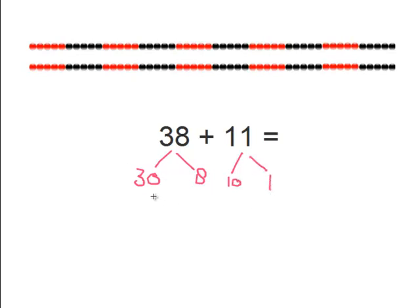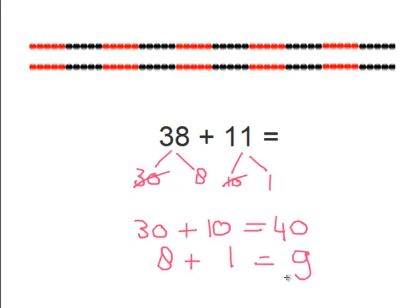So first let's add the 30 and the 10. So 30 plus 10 equals 40. And the 8 plus 1 equals 9. So 40 plus 9 equals 49.